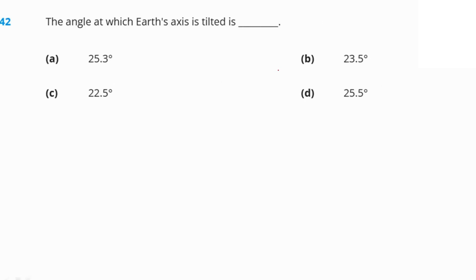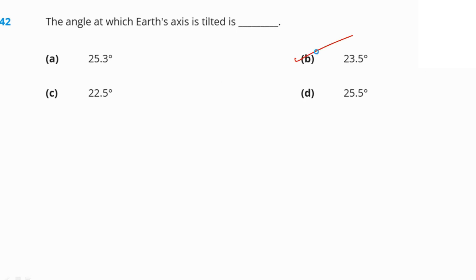The angle at which the Earth's axis is tilted is 23.5 degrees.